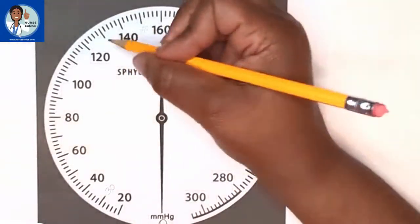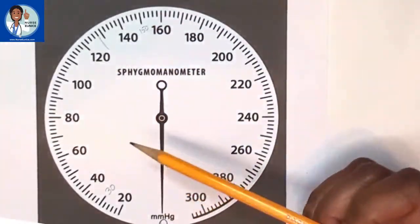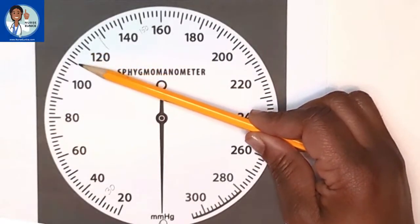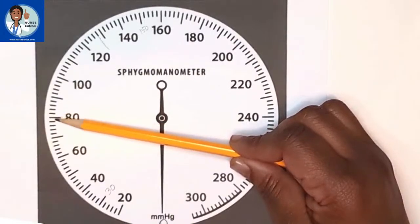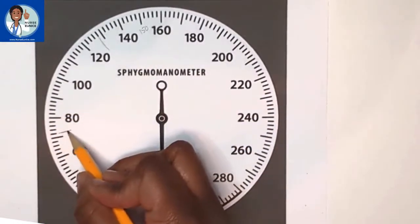And so here it is. Let's say we heard our first thump here. You're going to continue to release the air slowly. And wherever you hear the last thump and it gets really light, that would be our diastolic pressure.